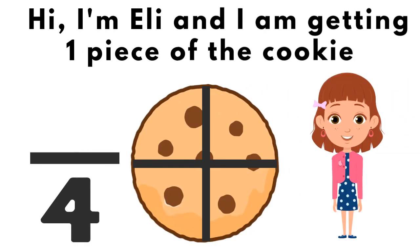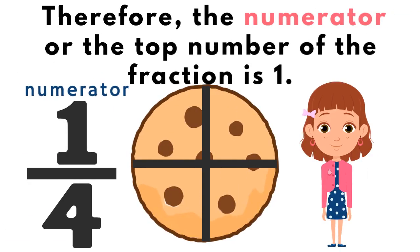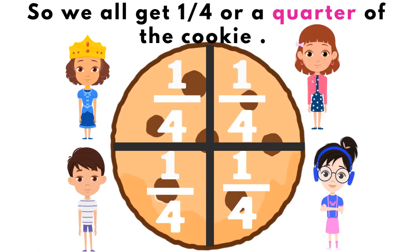Hi, I'm Ellie, and I'm getting one piece of the cookie, which is one part. Therefore, the numerator, or the top number of the fraction, is one. So we all get one-fourth, or a quarter, of the cookie. One-fourth, one-fourth, one-fourth, one-fourth.